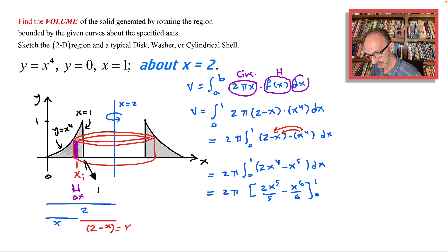That equals 2 pi times: plug in 1 for x to the 5th, that's 1, so we end up with 2 over 5, minus plug in 1 for x to the 6, that's just 1 over 6, all minus 0.